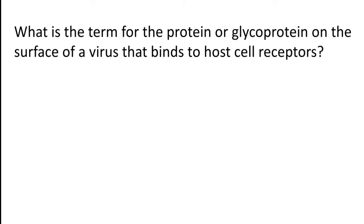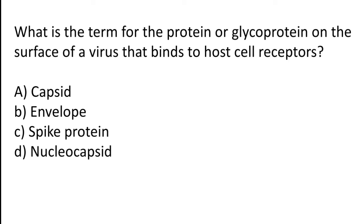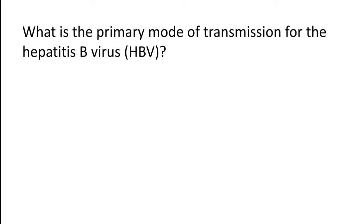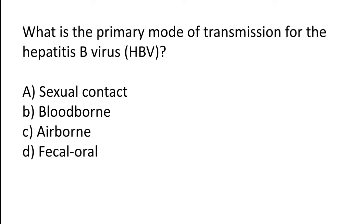What is the term for the protein or glycoprotein on the surface of a virus that binds to host cell receptors? What is the primary mode of transmission for the hepatitis B virus? Options: Sexual contact, Blood-borne, Airborne, Fecal-oral. The correct answer is option B — Blood-borne is the primary mode of transmission for the hepatitis B virus, HBV.